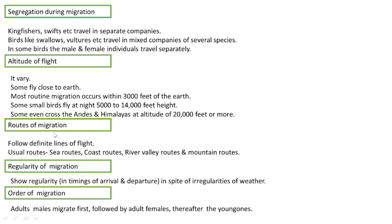Regarding routes of migration, birds follow definite lines of flight. Usual routes include coastal routes, river valley routes, and mountain routes. Birds show regularity in time of arrival and departure, irrespective of irregularities in weather. The order of migration is: adult males migrate first, followed by adult females, with young ones at the back.